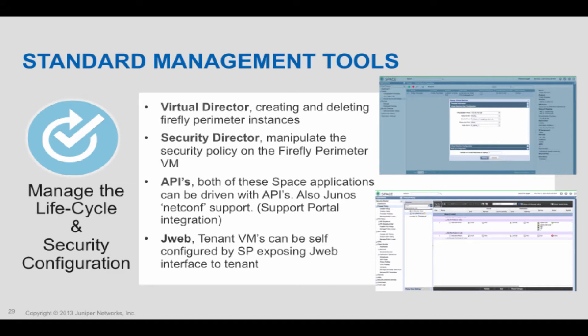In addition to Virtual Director, Firefly Perimeter has a couple of other ways to manage the actual Firefly VM. There's J-Web, which is a web interface for the individual VM that's been instantiated. Security Director manages multiple VMs simultaneously, whereas J-Web manages just a single Firefly Perimeter VM at one time. There are also APIs in both Virtual Director and Security Director, as well as APIs to manage the device directly. Things like Netconf and all those automation pieces that are very important to Juniper are all possible with these different tools.